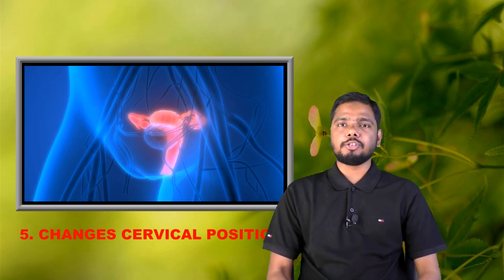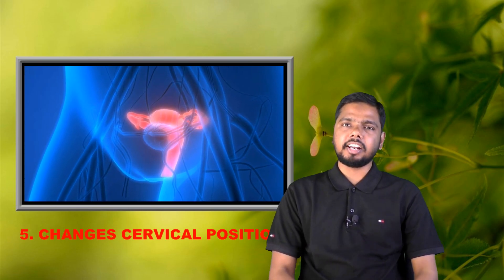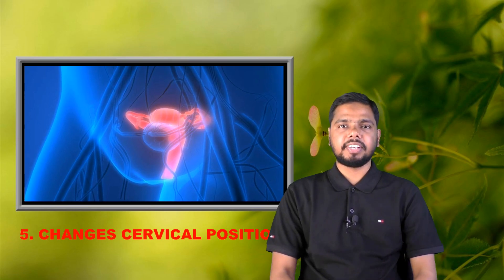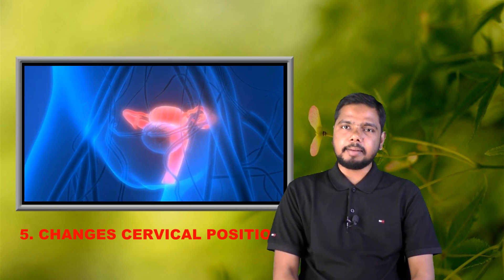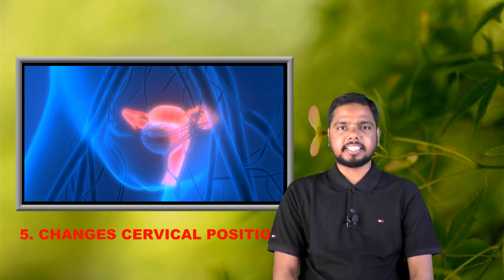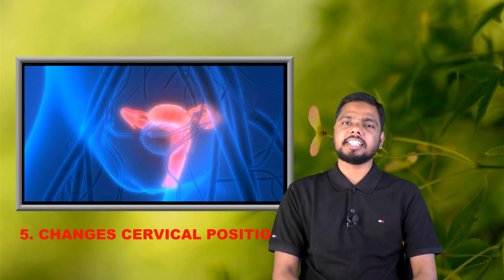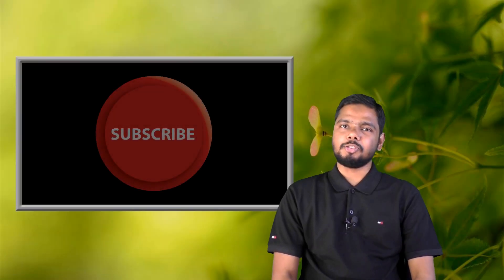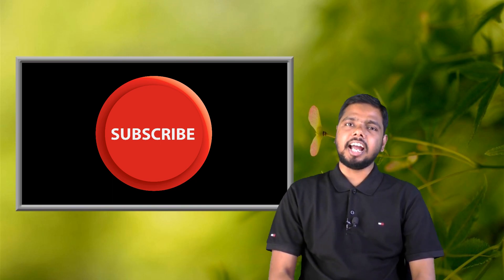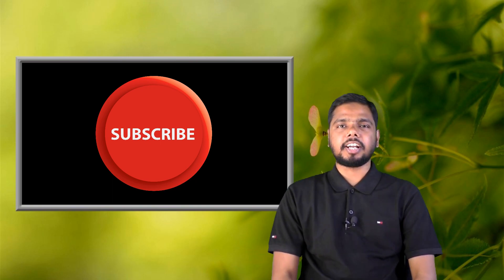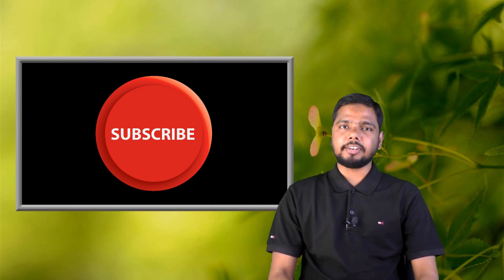A woman's cervical position can change during ovulation time. Your cervix may be larger than regular at this time. If you insert a finger into your private area, you can find a small knob — this knob is your cervix — but at other times you may not be able to find this. Dear viewers, if you have any other questions about ovulation, you can comment on this video. Please don't forget to subscribe to this channel to get our next videos. Thank you.